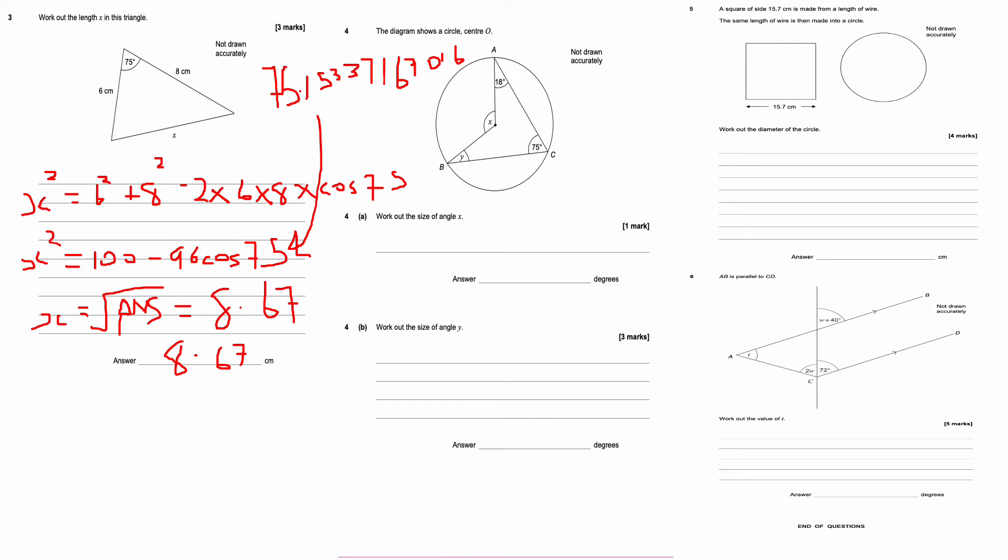This is question number four. We're now looking at some circle theorems. The diagram shows a circle centered at O. Work out the size of angle X. So the angle at the centre is double the angle at the circumference. So that's one of the circle theorem rules. So X is double 75, which is 150. So the rule to remember guys, the angle at the centre is double the angle at the circumference. I believe that there are 8 in total that you'll have to know.